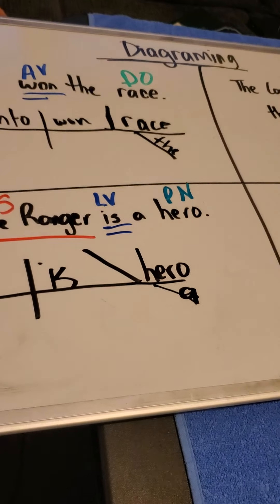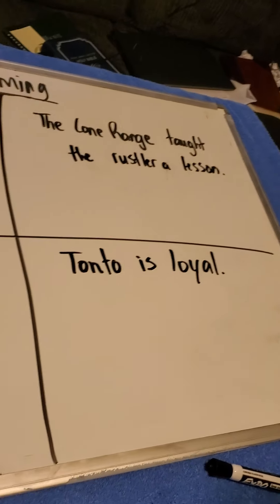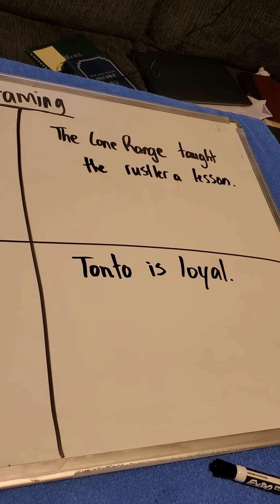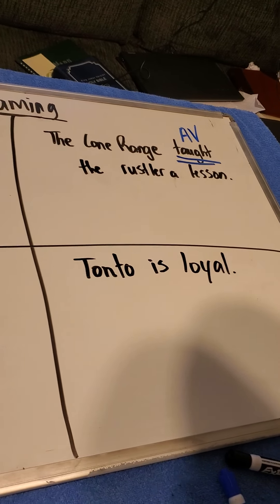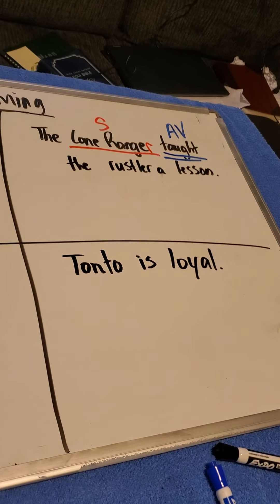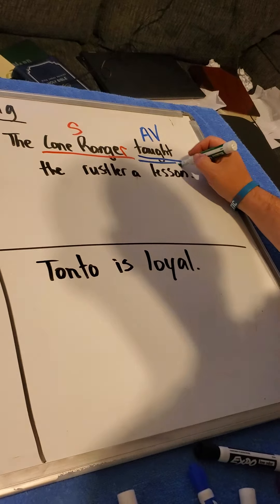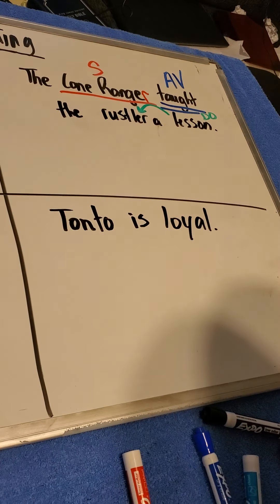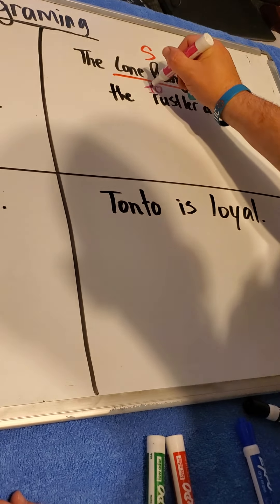The Lone Ranger taught the rustler a lesson. Apparently it was one of those superhero western things. I'm looking for the verb. I don't see any on the list, so I'm looking for something I can do. Taught is my action verb. Now I'm asking, who taught? It's the Lone Ranger — the Lone Ranger is the subject. The Lone Ranger taught what? He taught the lesson — lesson is the direct object. Now I ask, to whom? The answer is the rustler. It's the indirect object. Some of us struggled with this last week, so I want to be sure you got it.